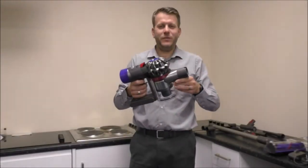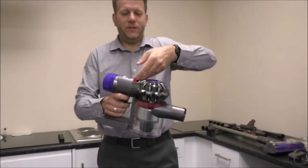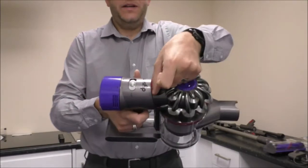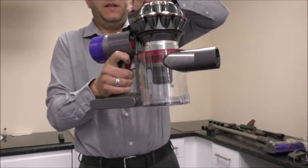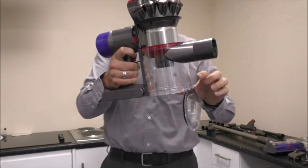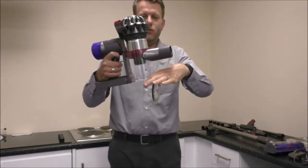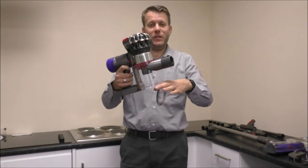So on this vacuum it's very easy to empty the bin. All you need to do is pull this handle at the top, it's a red handle clearly labeled, so any dirt that was in the bottom will drop out. When you do this just make sure you do it over a bin.